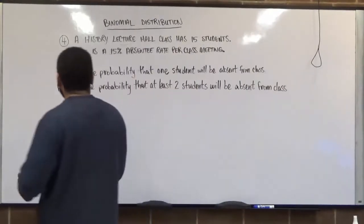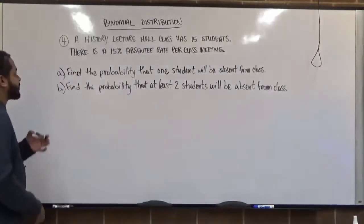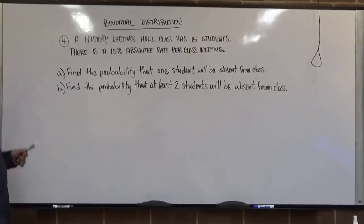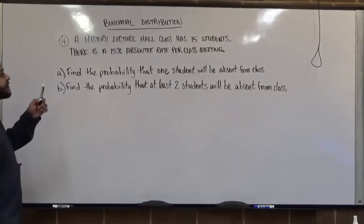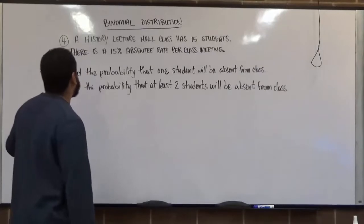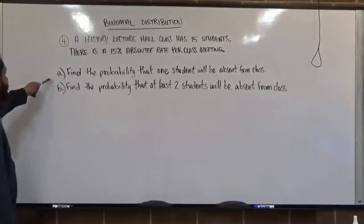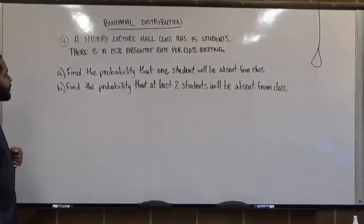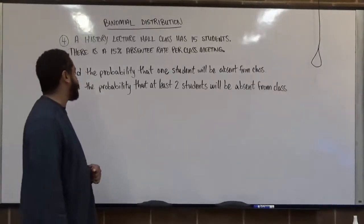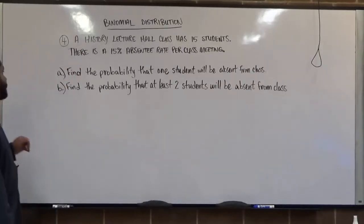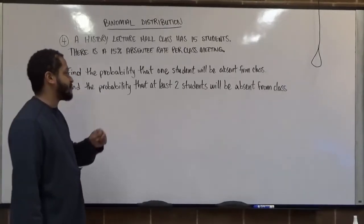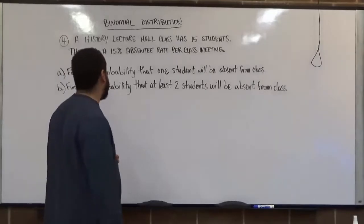In this problem, we have a history lecture where our class has 15 students, and there is a 15% absentee rate per class meeting. We have two questions: find the probability that one student will be absent from class, and find the probability that at least two students will be absent from class.